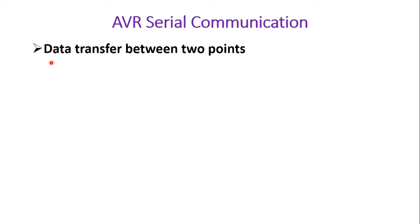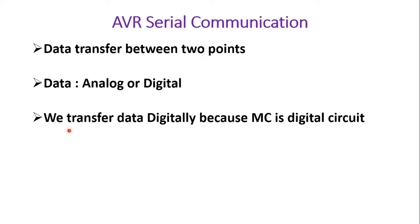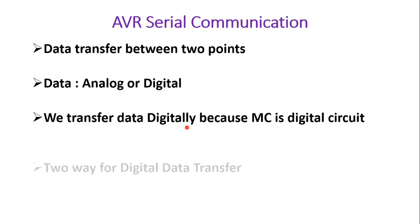Serial communication is useful when we want to transmit data between two points. Data could be analog or digital in nature. We transfer data digitally because the microcontroller is a digital circuit. If the data is analog in nature, we need to convert it into digital form before we can transmit it.